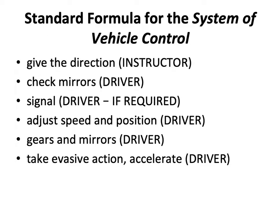The standard formula for the system of vehicle control is as follows: give the direction, check mirrors, signal, and if required, adjust speed and position, gear changing and mirror checks, take evasive action — for example, give way — and then accelerate out of the situation.